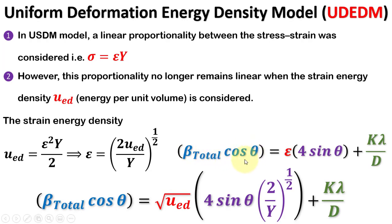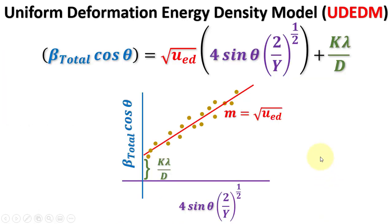The Williamson-Hall equation is modified accordingly for this model. Therefore, in the Uniform Deformation Energy Density Model, we plot 4 sin theta over the square root of Y on the x-axis, and beta cos theta on the y-axis. From the slope we get the strain energy density, and from the intercept the crystallite size.